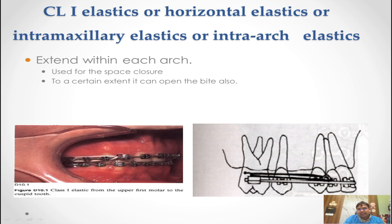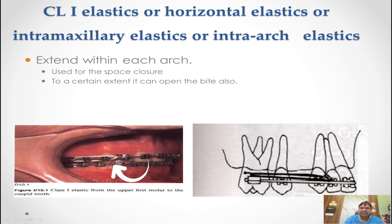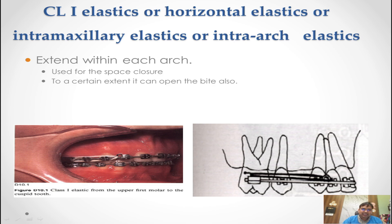Class 1 means when we just want to do en masse retraction or segmental retraction — we take the help of a rubber band or elastic, engaging it from a hook to the molar, or any tooth to the molar. This is the class 1 elastic. Quite frequently we use elastic chain rather than this intraoral rubber band for class 1 mechanics.